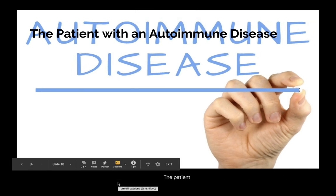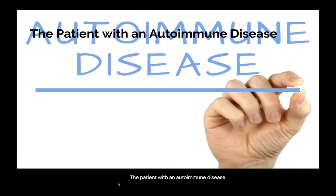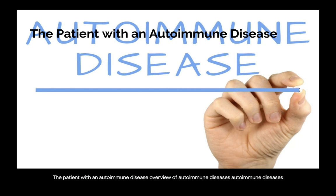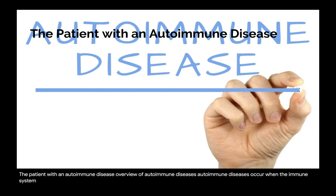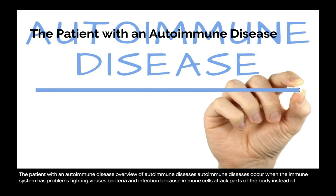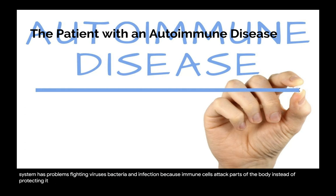Overview of autoimmune diseases: autoimmune diseases occur when the immune system has problems fighting viruses, bacteria, and infection because immune cells attack parts of the body instead of protecting it.